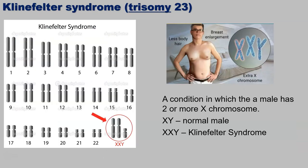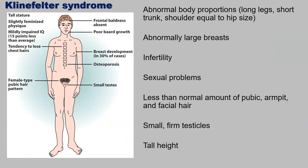Klinefelter syndrome is trisomy 23 — the 23rd pair are the sex chromosomes. Here we have an individual who has two X chromosomes and a Y, making them XXY. A normal female is XX and a normal male is XY. It's a condition where males have an extra X chromosome. Some things you'll see in Klinefelter syndrome include less body hair, breast enlargement, and overall more female-like features. You'll also see abnormal body proportions, long legs, a short trunk, shoulders equal to hip size, abnormally large breasts, infertility, sexual problems, less than normal pubic, armpit, and facial hair, small firm testicles, and tall height.